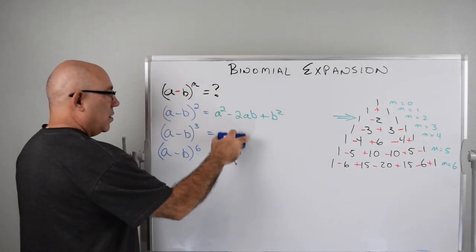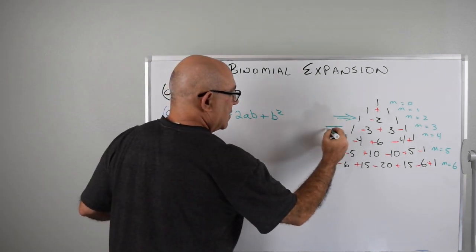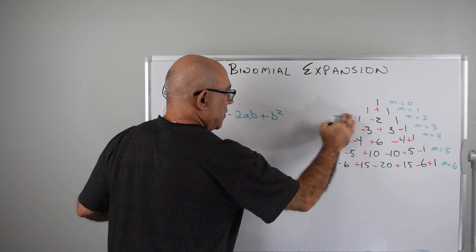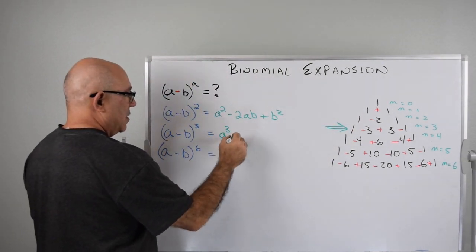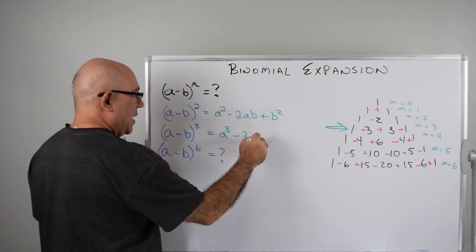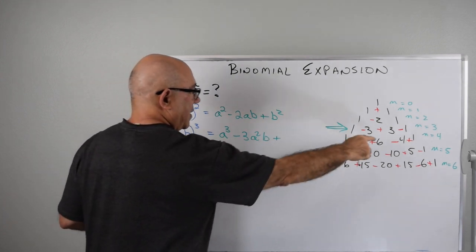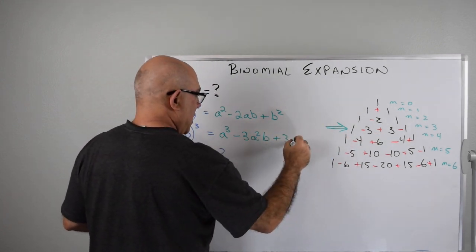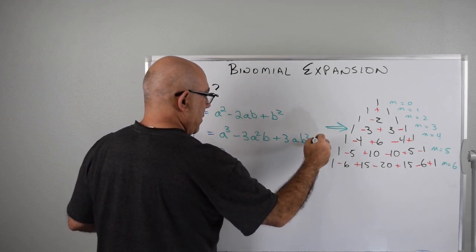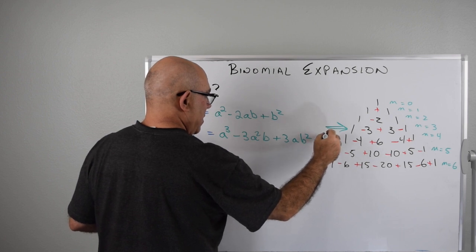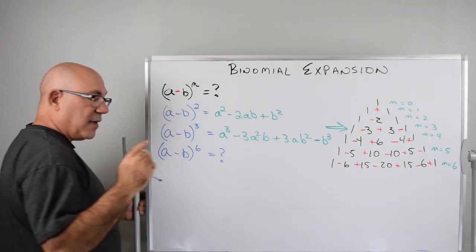Now let's go to (a minus b) cubed — we're working on this level of Pascal's Triangle. We have a cubed, minus three a squared b introducing b and reducing a by one, then a positive term three a b squared, a goes down one and b goes up one, and then minus b cubed.